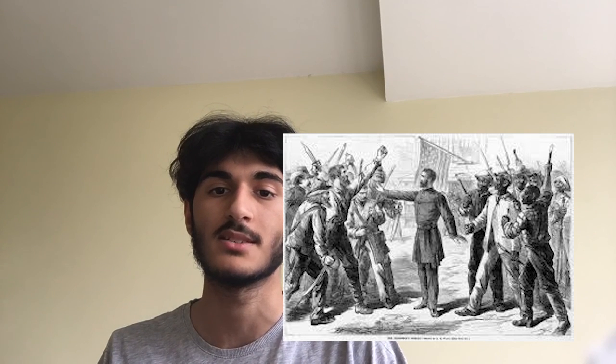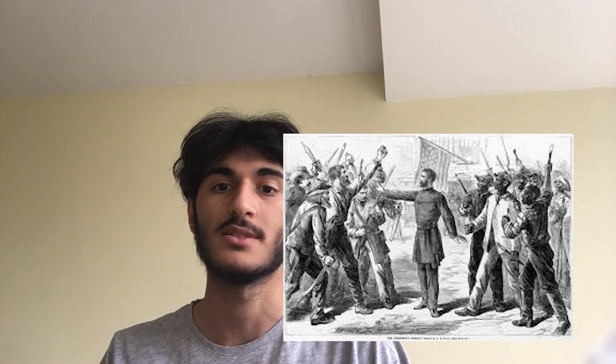In 1865, Congress created the Freedmen's Bureau as basically an early form of welfare. It provided provisions such as free education and land to many freed slaves and also poor whites. This was even on a previous AP test about the Freedmen's Bureau protecting poor African Americans. The agency was relatively successful in educating many African Americans — hundreds of thousands of them, actually.